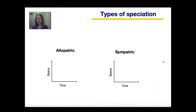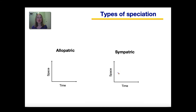We will explore two different types of speciation: allopatric versus sympatric. They are not the only types, but the ones we will focus on. The main difference between them is whether the new species arise within the same geographic area or different geographic areas. So let's first take a look at sympatric.